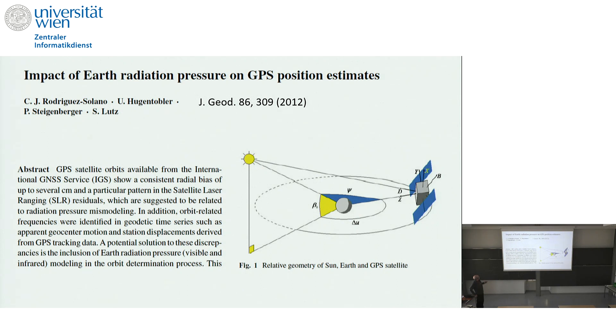So people noticed - this is work here from Technical University Munich and University Bern - people noticed GPS satellite orbits available from IGS show a consistent radial bias of several centimeters and a particular pattern in the ephemeris residuals, which are suggested to be related to radiation pressure mis-modeling. Of course, radiation pressure from the sun had been taken into account. But what people point out here, a potential solution to this discrepancy is the inclusion of Earth radiation pressure modeling in the orbit determination process. And they included it and they found an improvement of the agreement. So we see, again, related to measurements with clocks, the blackbody radiation of Earth on the satellite 20,000 kilometers away is detectable and is relevant in this field. I think it's a nice topic also maybe to be discussed in this context. Okay, with this I'd like to close and thank you for your attention.